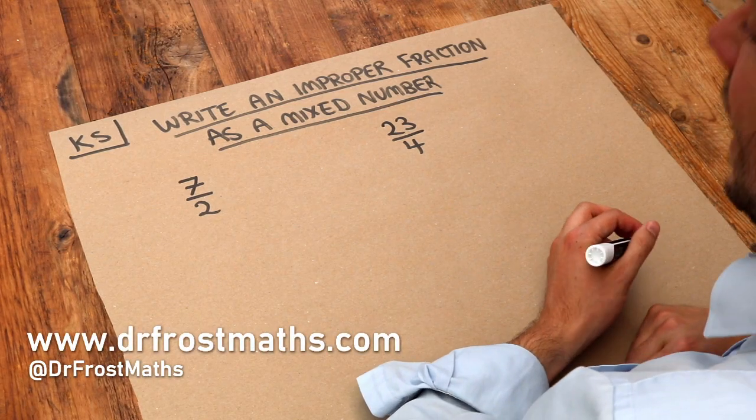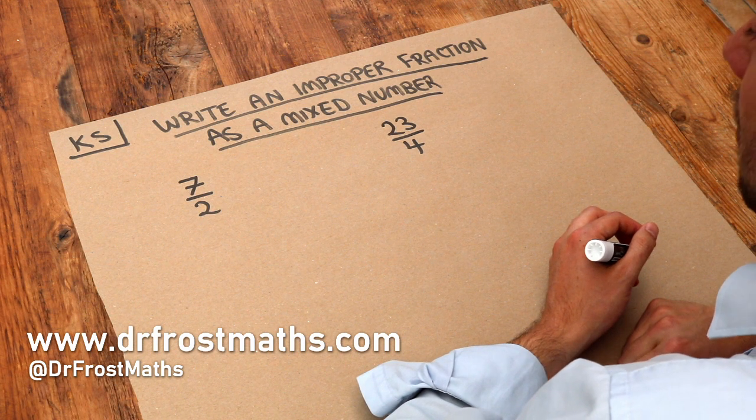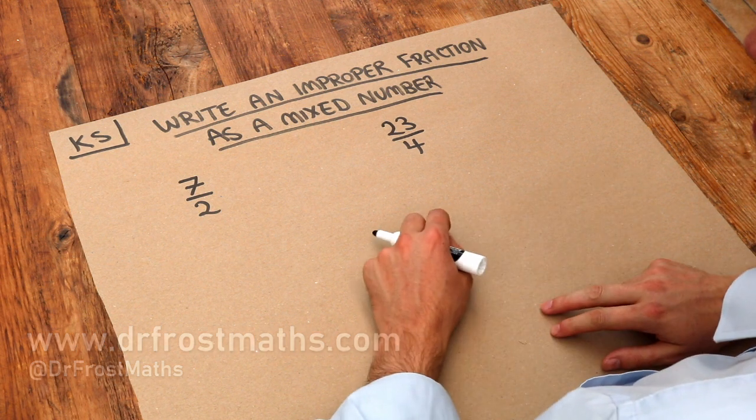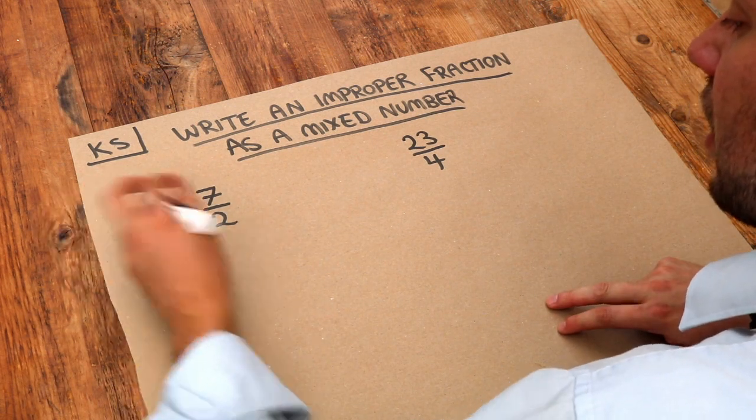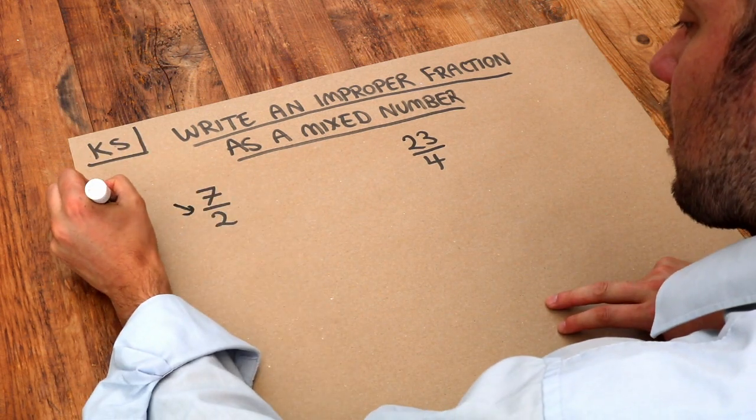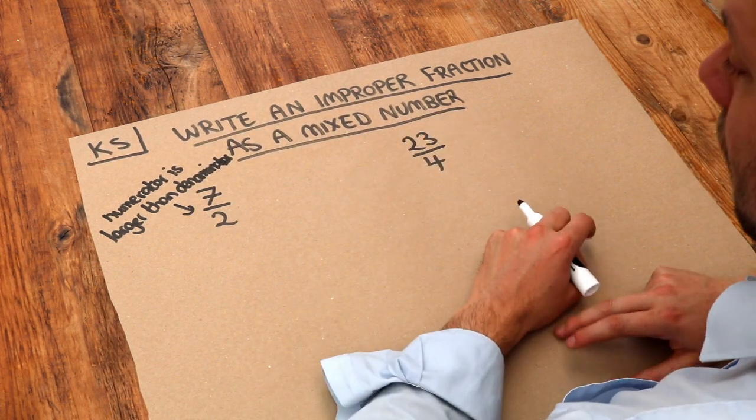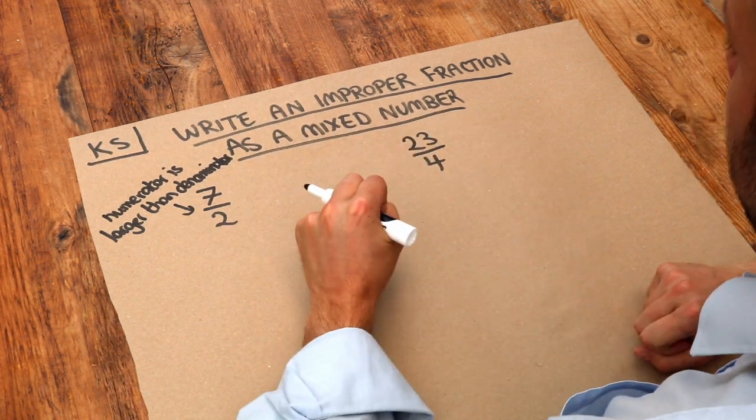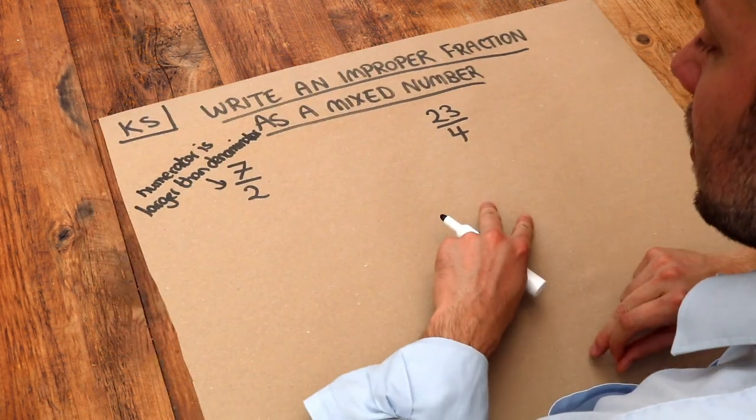Hello and welcome to this Dr. Ross Maths key skill video on writing an improper fraction as a mixed number. An improper fraction is when we have a single fraction where the numerator is bigger than the denominator, and we want to convert it into something called a mixed number. That's where we have a whole part and a fractional part of the number.